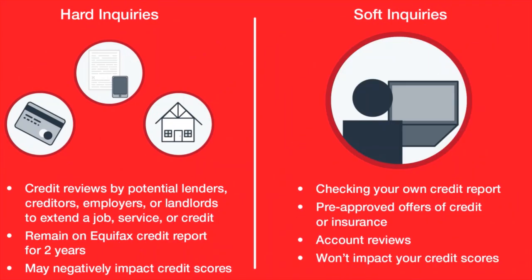You also have inquiry information. There are two types of inquiries: soft and hard. Soft inquiries may result from checking your own credit reports, companies extending pre-approval offers of credit or insurance, or your current lenders conducting periodic account reviews. Soft inquiries do not impact credit scores. Regularly checking your credit reports can help you monitor your accounts and recognize inaccurate or incomplete information, or even suspicious activity that may signal potential identity theft. Hard inquiries occur when companies review your Equifax credit report because you have applied for credit or a service — for example, a new loan, a credit card, or a mobile phone contract. Hard inquiries remain on your Equifax credit report for up to two years and may adversely impact credit scores.